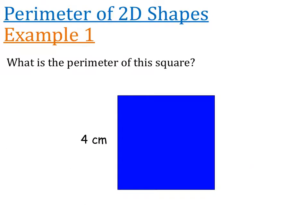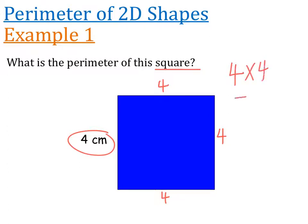What is the perimeter of this square? There's only one number given, but a square has all sides exactly the same, so all four sides are 4 cm. Four lots of 4 is 16 centimetres. You could also add four lots of 4 — either method is completely acceptable.